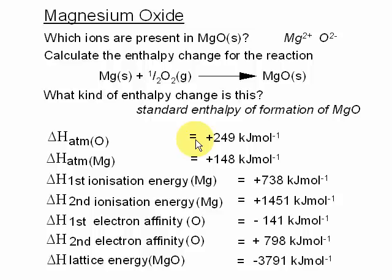Here's another Born-Haber example, this time with magnesium oxide. First of all, which ions are present in magnesium oxide? The answer is Mg2+ and O2-, because magnesium is in group 2 and oxygen is in group 6.